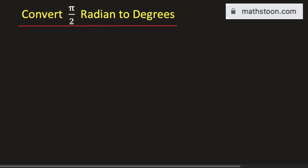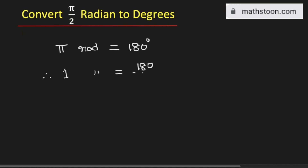In this video, we will convert pi by 2 into degree. We know that pi radian is equal to 180 degree. Therefore, 1 radian is equal to 180 divided by pi degree.